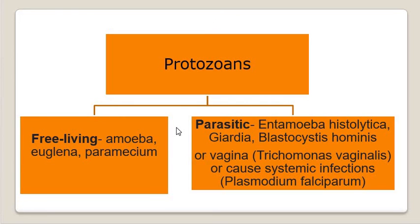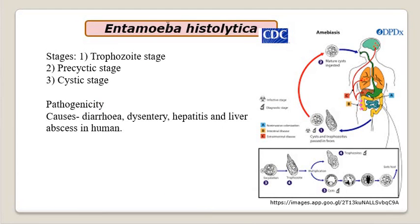Examples of parasitic protozoans include Entamoeba histolytica, Giardia, Blastocystis hominis, and Trichomonas vaginalis, which exists inside the vagina. Some parasites cause systemic infections, such as Plasmodium falciparum, which infects human beings and causes malaria. In this lecture, we are going to study the role of a few of these parasitic protozoans in human welfare.